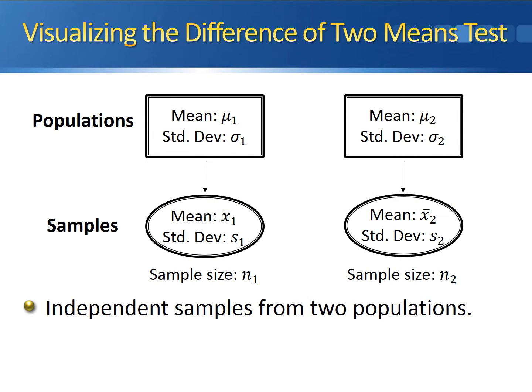Here's a visual representation of the difference of two means test. Up top, inside the boxes, we have our populations. These populations have population means mu1 and mu2, with population standard deviations sigma1 and sigma2. Since we can't gather information from every single subject in the population, we take a random sample from each. From population 1, we get a sample mean of x1 bar, a sample standard deviation of s1, and a sample size of n1. From population 2, we get a sample mean of x2 bar, a sample standard deviation of s2, and a sample size of n2.